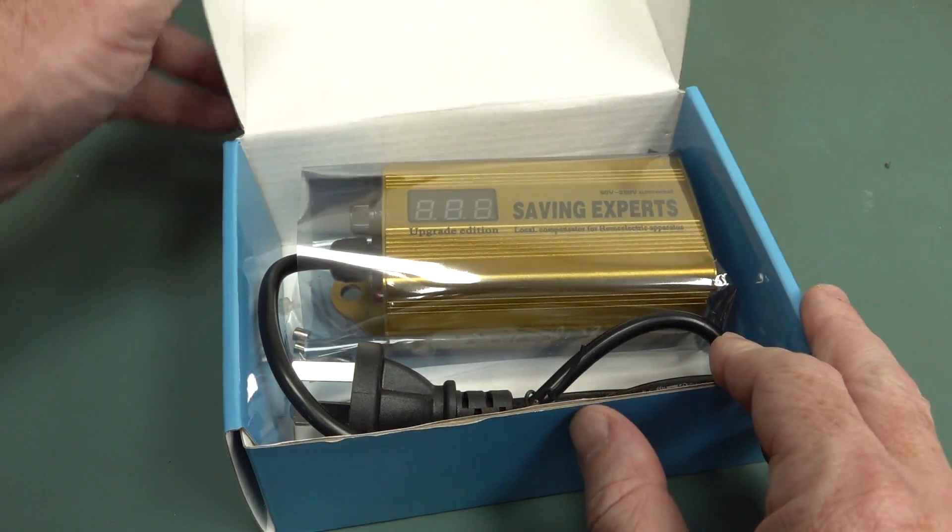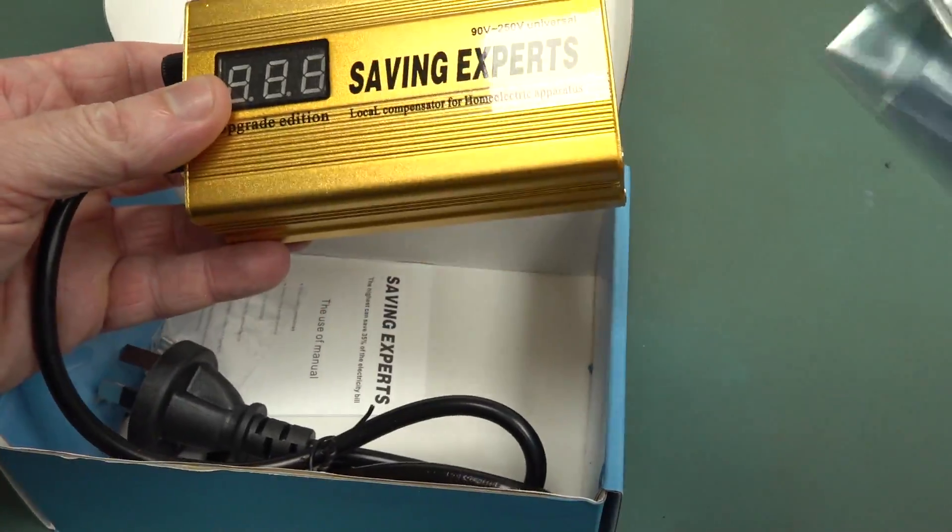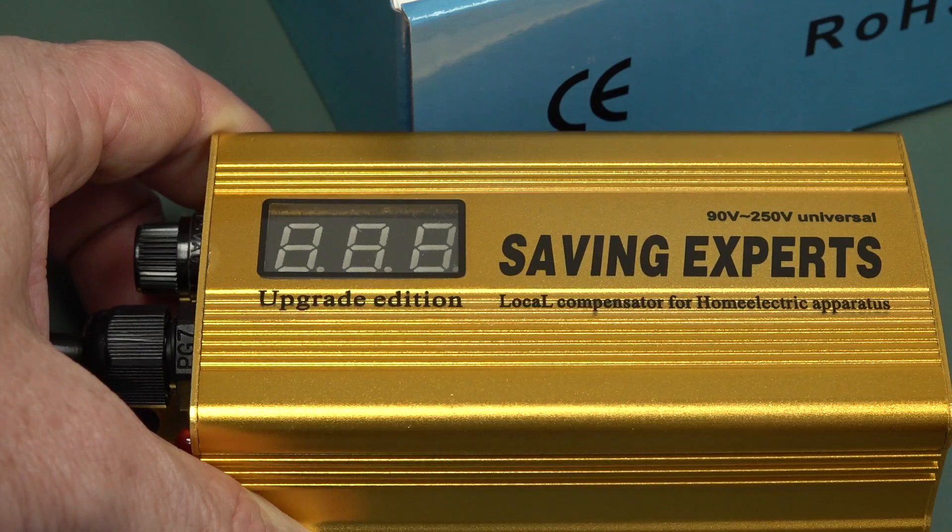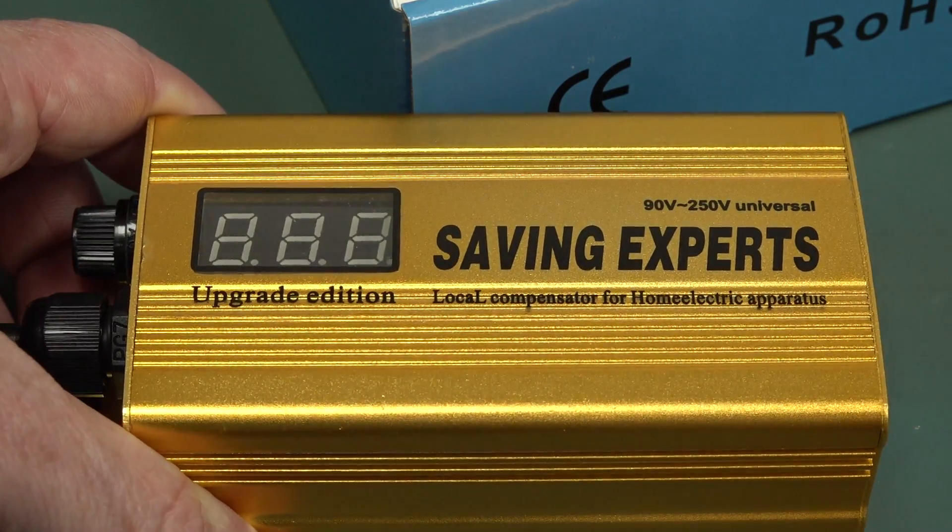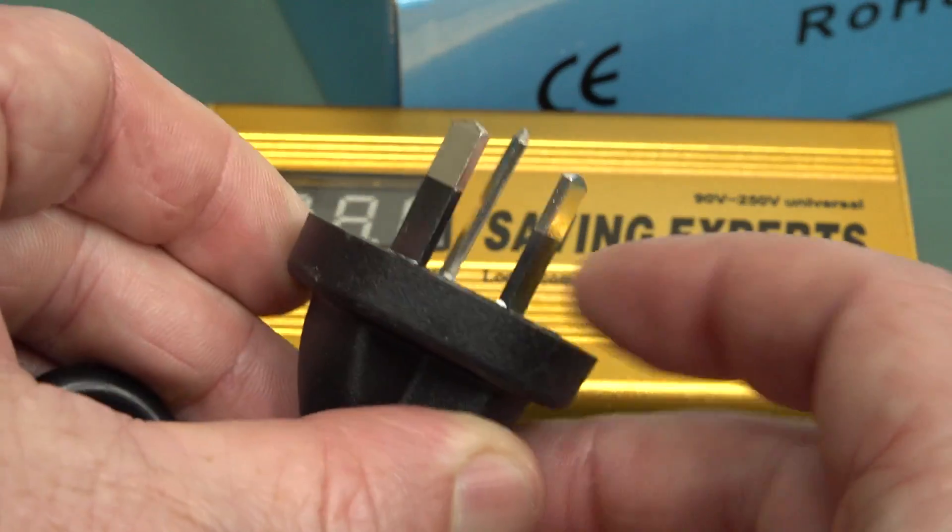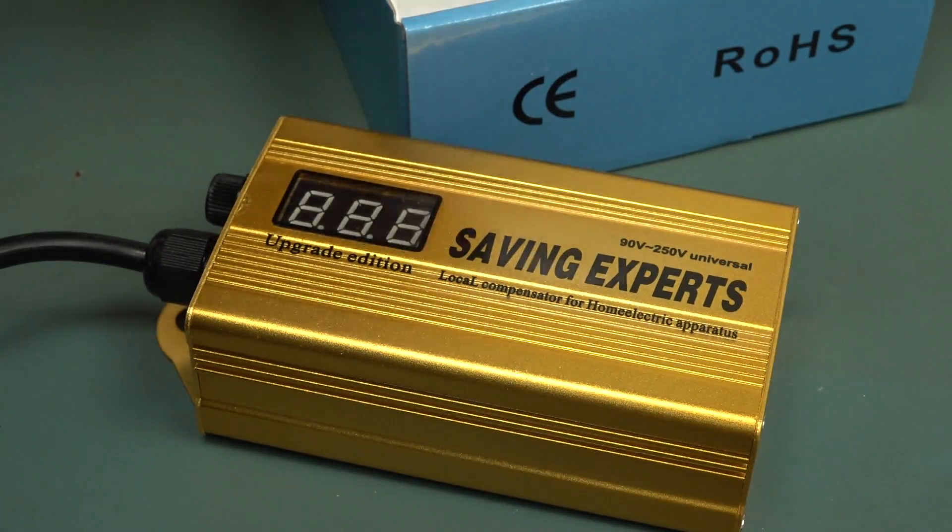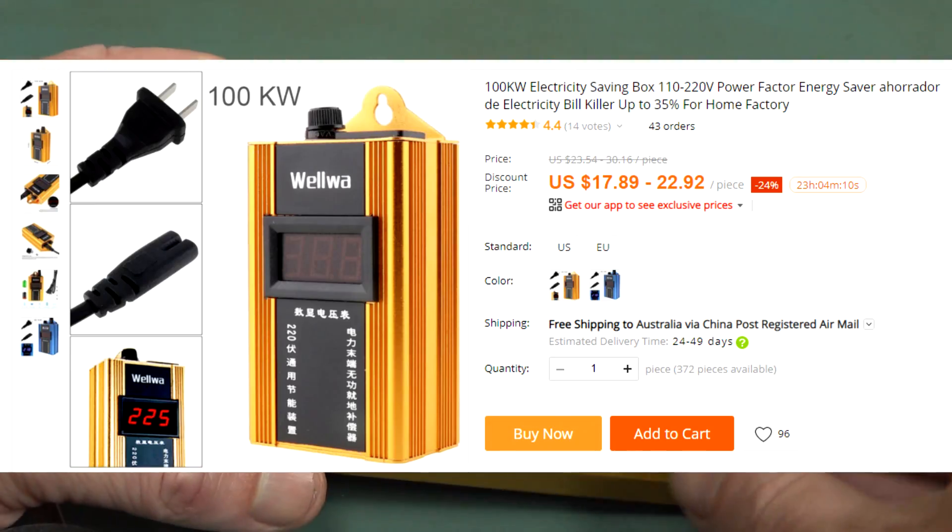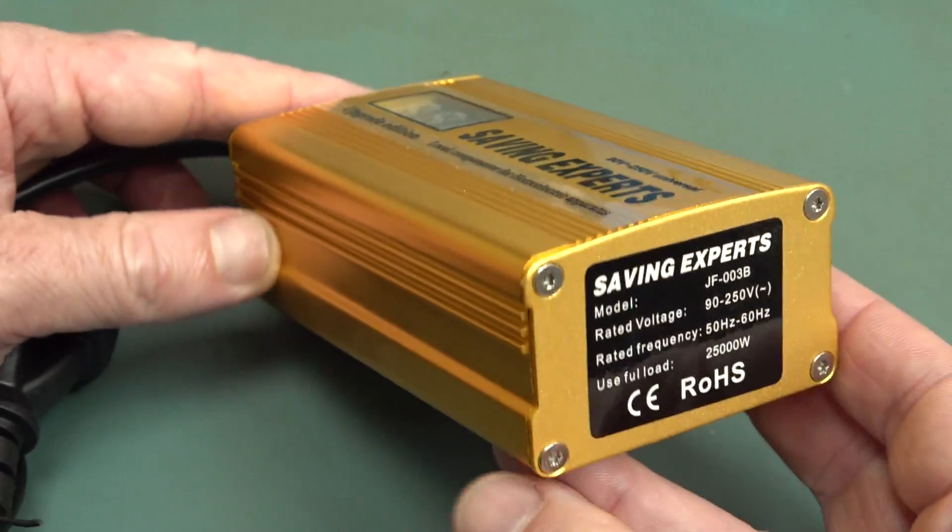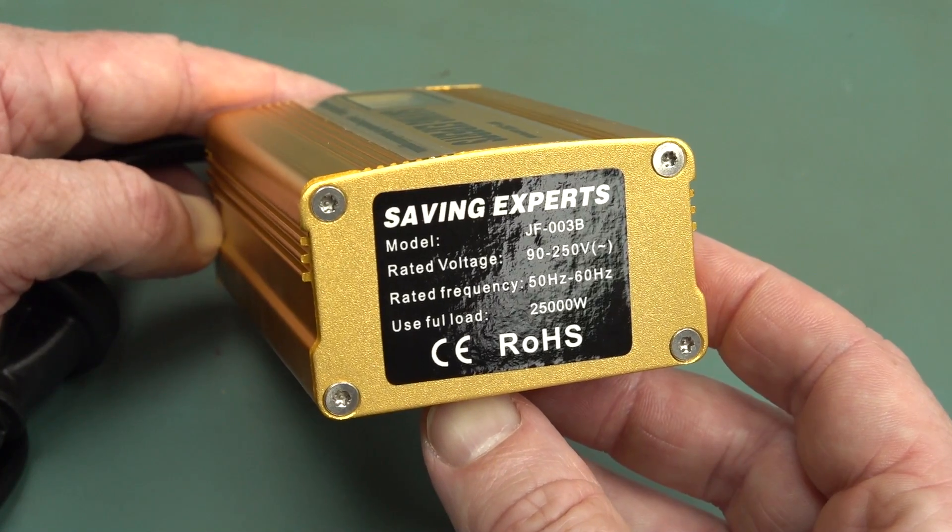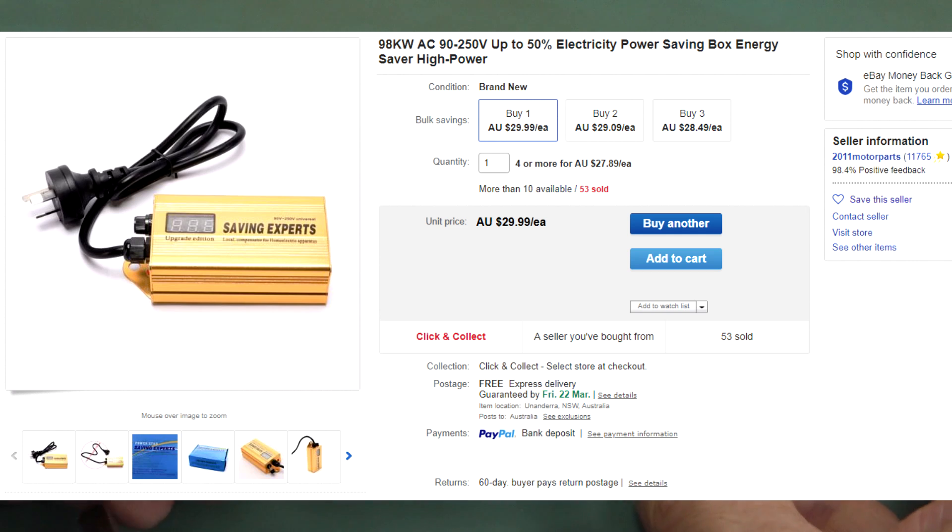I can smell bullshit. Bullshit detected. Bullshit level DEFCON 5. So yep, it says right on the box. It's basically a power factor correction capacitor. Look, it's sealed for our protection. Saving experts. Oh, it's the upgrade edition. Local compensator for home electric apparatus. 90 to 250 volt universal. And look, it's got a LED display on it. It has the proper approved Aussie plug with the insulation. A couple of fuses and a user manual.